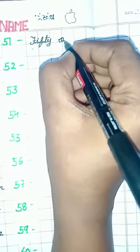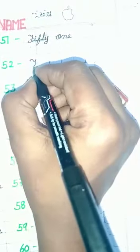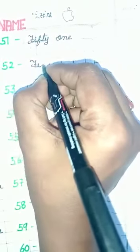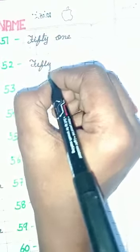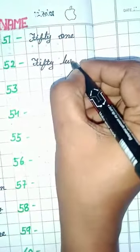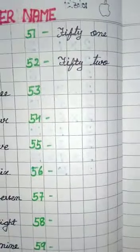51. F-I-F-T-Y, 50, O and E, 1, 51. 52. F-I-F-T-Y, 50, T-W-O, 2, 52.